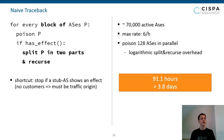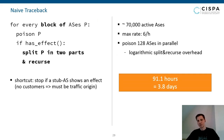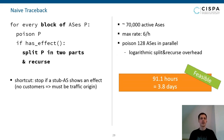We can do even better: stop the search once we find a stub AS. A stub AS has no further customers and does not provide transit for other systems. If traffic comes from a stub AS, it must be the origin because it has no customers that could be the true origin.